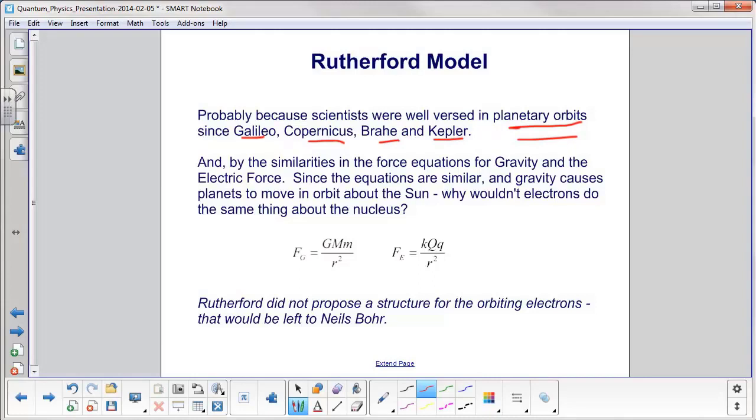Also, notice the similarity in the force equations for gravity and the electric force. Here's the gravitational force. Here's the electric force. Both have a 1 over r squared dependence. Both have a constant in front of them. And in gravity, the key operators are the masses. And in the electric force, it's the charges. So, since the equations are similar, and gravity causes planets to move in orbit about the sun, why wouldn't electrons do the same thing about the nucleus?